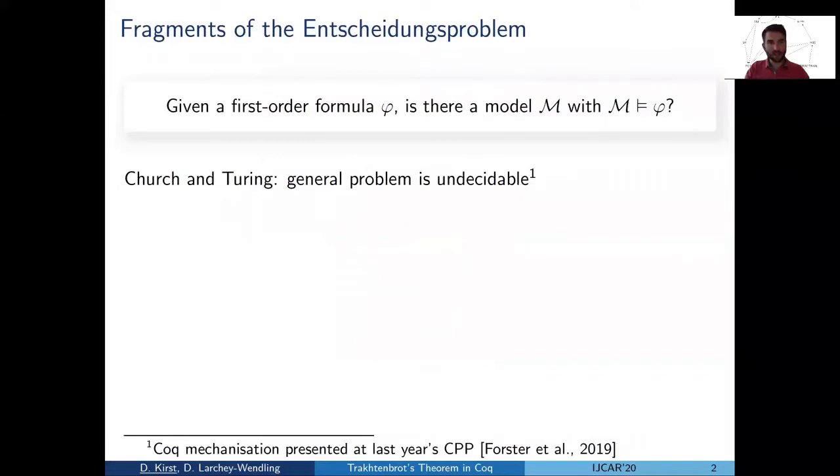My name is Dominic and I'm presenting a Coq mechanization of Trachtenbrot's theorem I did together with Dominic. Let's look at the classical decision problem of first order logic. We can formulate it as given the first order formula phi, is there a model M satisfying phi?